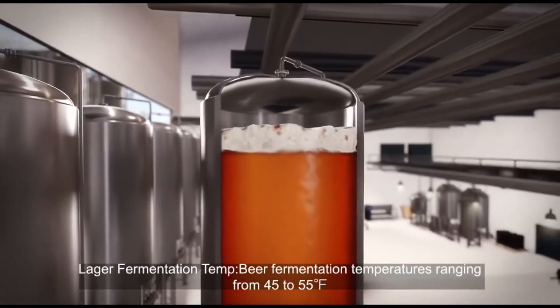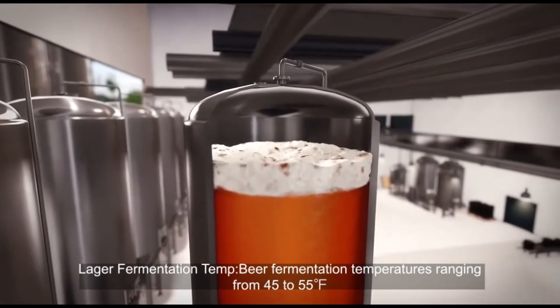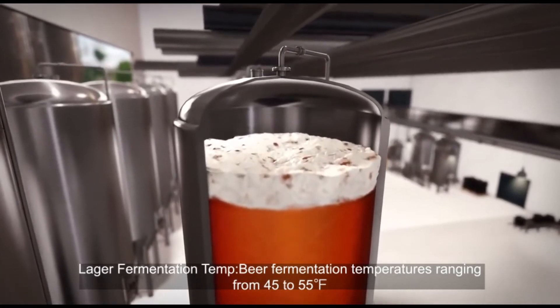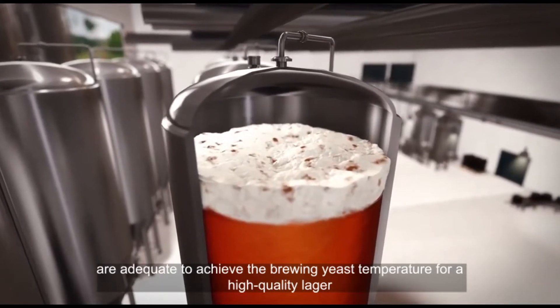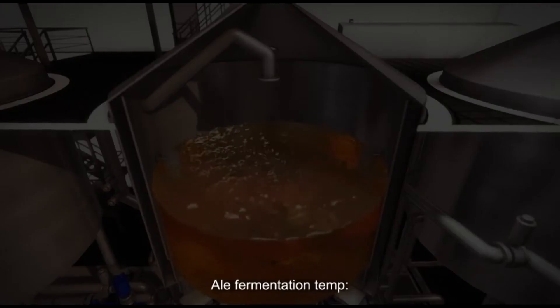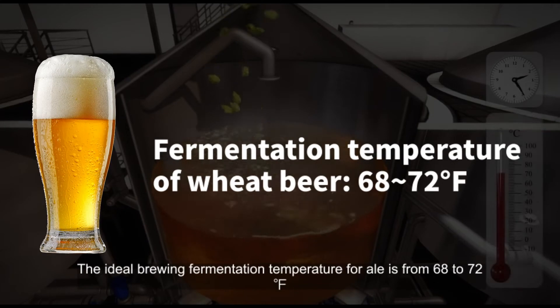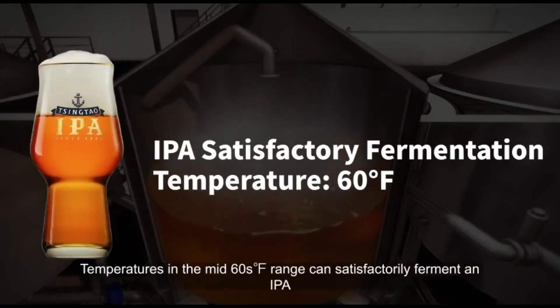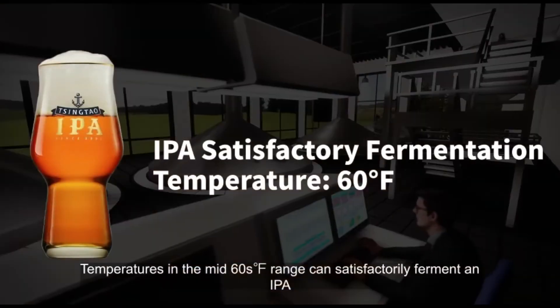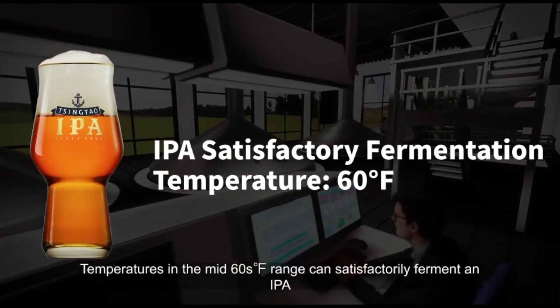Lager Fermentation Temp: Beer fermentation temperatures ranging from 45 to 55 degrees Fahrenheit are adequate to achieve the brewing yeast temperature for a high-quality lager. Ale Fermentation Temp: The ideal brewing fermentation temperature for ale is from 68 to 72 degrees F. IPA Fermentation Temp: Temperatures in the mid-60s degree F range can satisfactorily ferment an IPA.